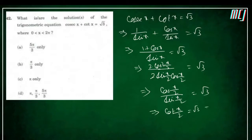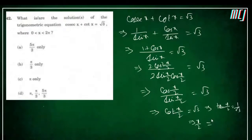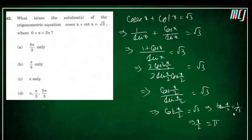Therefore tan(x/2) = 1/√3, so x/2 = π/6, giving x = π/3. For the second solution: tan is also positive in the third quadrant, so x/2 = π + π/6 = 7π/6.